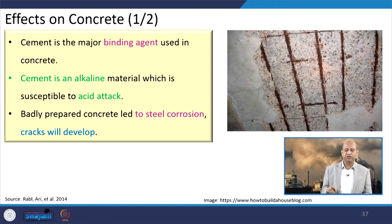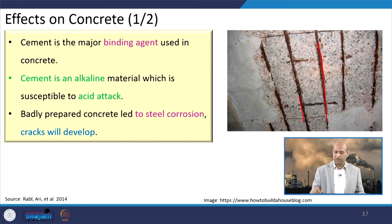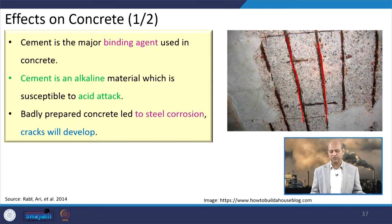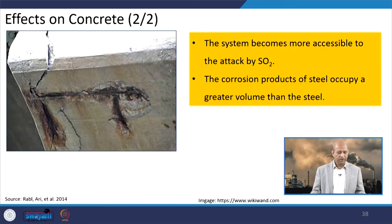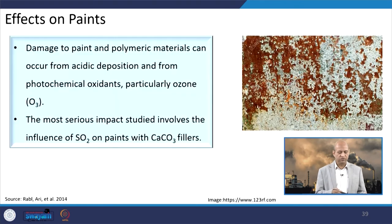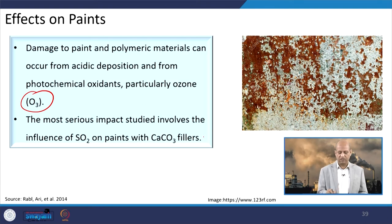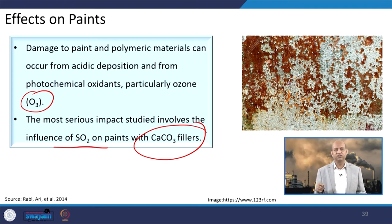When we talk about concrete, in reinforced concrete — where steel rods and iron rods are present — these are damaged by acid rain, rust happens, and volume increases. Further cracks develop in the concrete and concrete damage also happens. On paints, there are paints which can be damaged by ozone because it is a highly oxidizing gas. There is also presence of calcium carbonate fillers in the paint, so that can get affected by SO2 as well. Initially ozone takes part and then damage progresses quite high in the longer term. These kinds of effects are seen when paint is in a polluted environment.